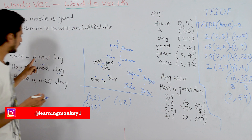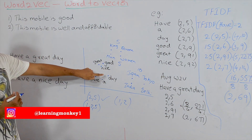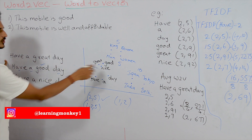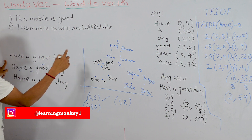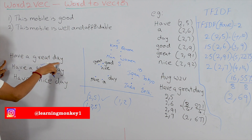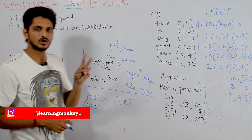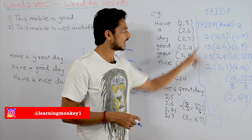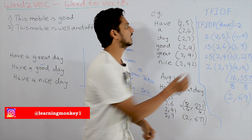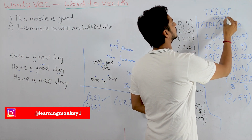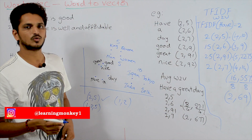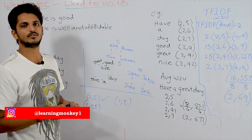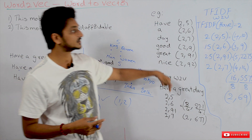Now, words are converted into vectors. But usually what we have to do is convert an entire sentence into numerical format. In Word2Vec, words are converted into vectors — meaning numerical format — but we need to convert the entire sentence. There are two ways to convert sentences into vectors: one is Average Word2Vec, and another is TF-IDF Word2Vec.